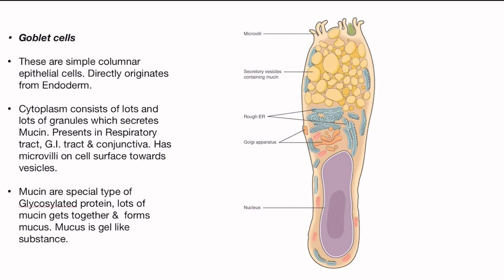Mucin is a special type of glycosylated protein. Lots of mucin get together and form mucus. Mucus is a gel-like substance that acts as a protective layer. Mucin ek khas tarike ka glycosylated protein hota hai aur bahut saare mucin ek saath jud kar mucus banate.